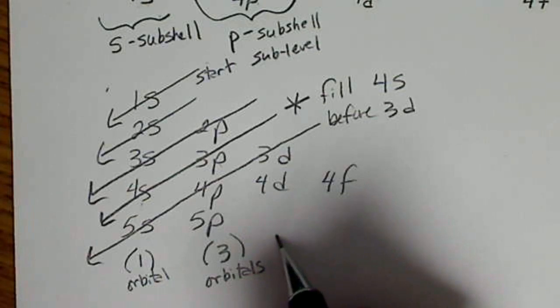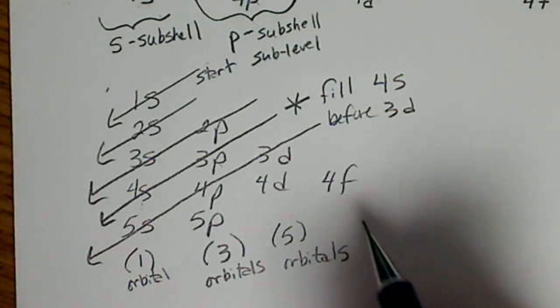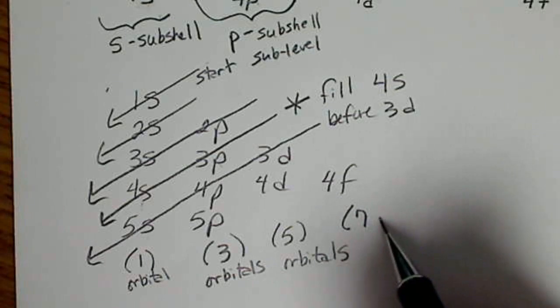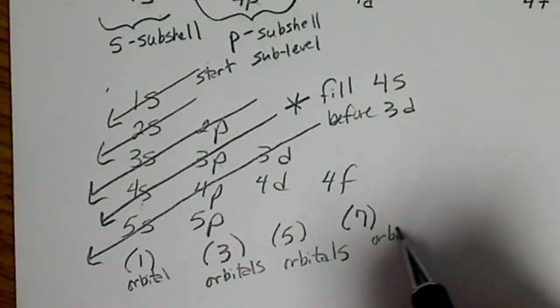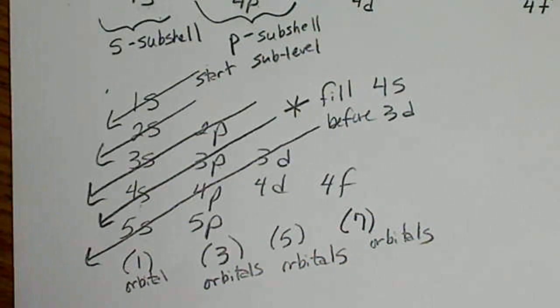And then the Ds, we need to remember that there are 5 orbitals. So the pattern increases by odd number. So in the F, there are 7 orbitals. And the reason for this strange pattern comes out of a complicated math that we don't want to look at.